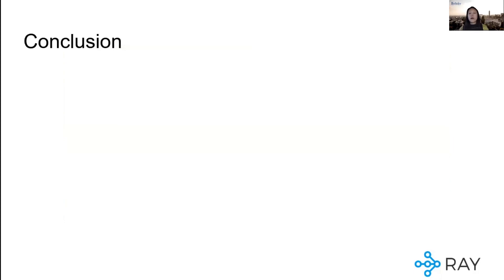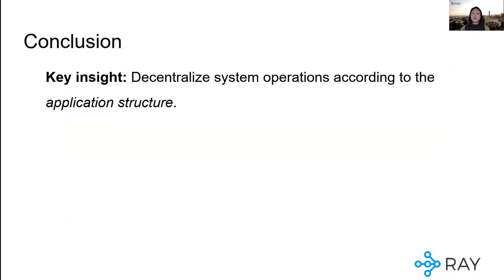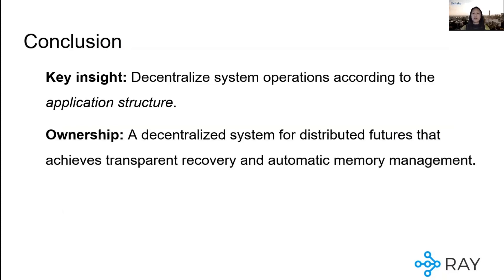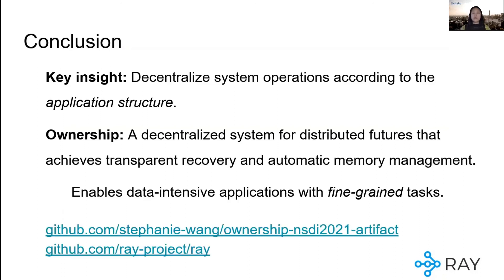Thus the key insight behind ownership is to decentralize the system according to the structure of the application. That allows us to achieve transparent recovery and automatic memory management without sacrificing performance. In doing so, we can enable new applications of distributed futures, such as in video processing and model serving. All of our code is open sourced and deployed in live applications today as part of the Ray project. Thank you, and I'll take any questions.